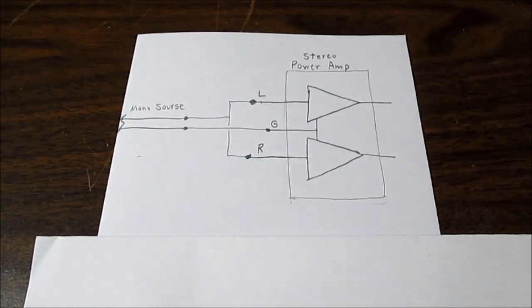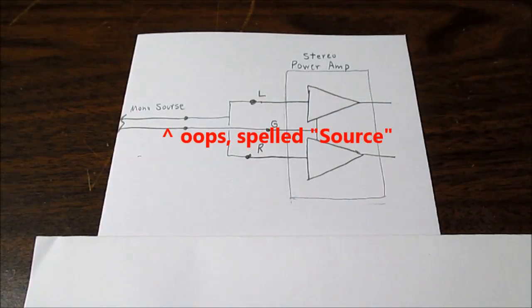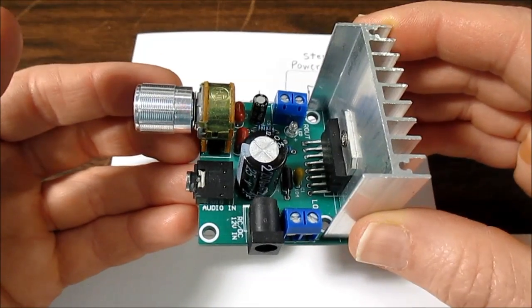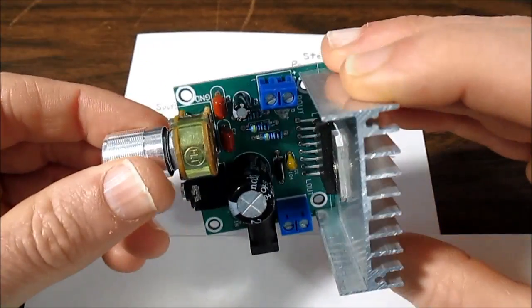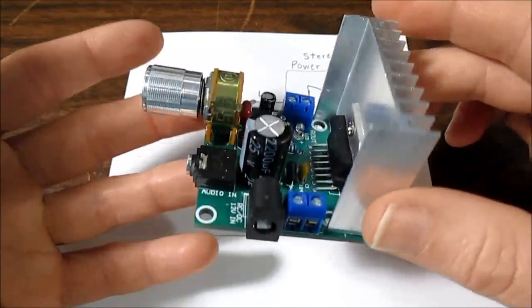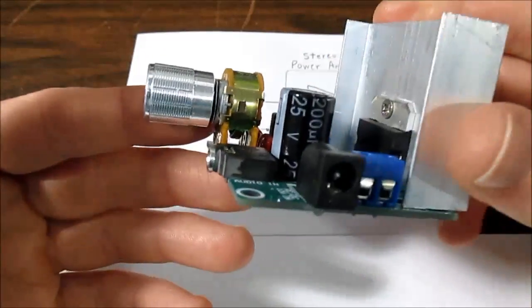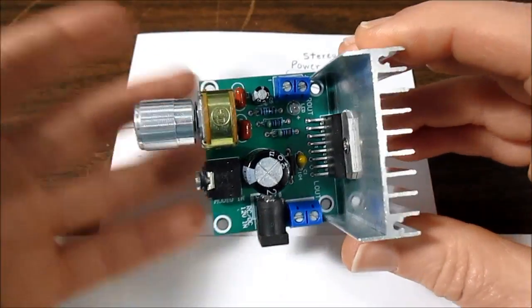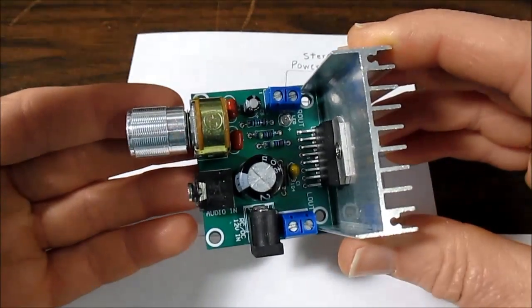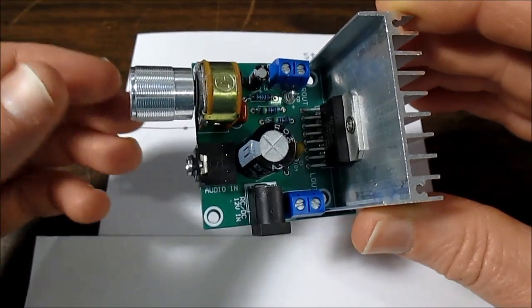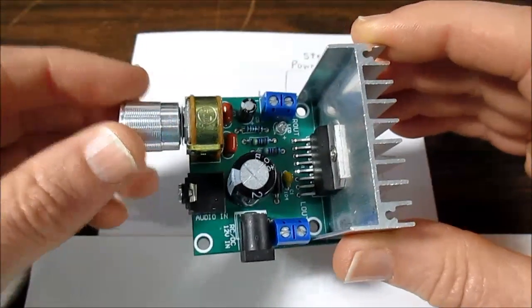Well first off is connecting a mono signal to a stereo amplifier. For example, I reviewed this amplifier in the last video. It was 10 watts per channel but you're dealing with a 20 watt amplifier because you have two channels and you might as well take advantage of them. So it's pretty easy to connect the mono signal to the stereo amplifier.